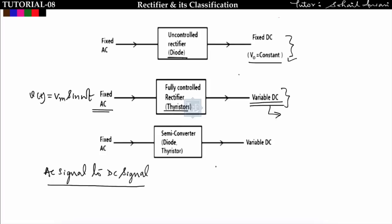The third category is the semi-converter, which is a combination of diode and thyristor. In this case we also get a variable DC output depending upon the firing angle of the thyristor.